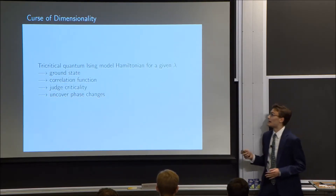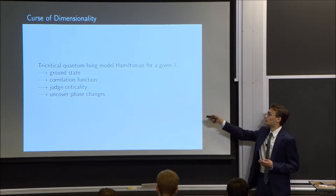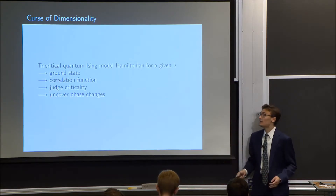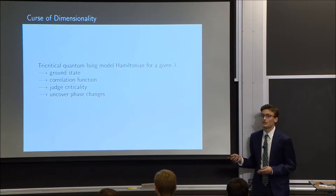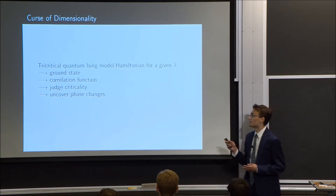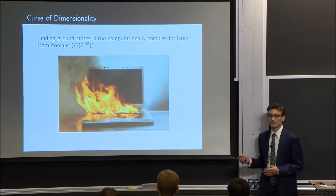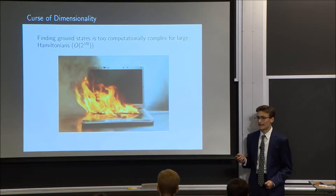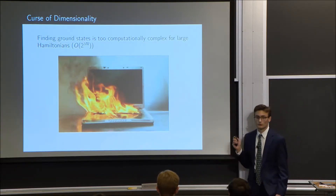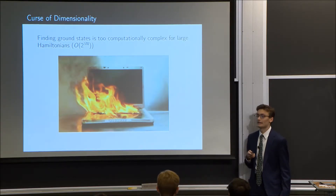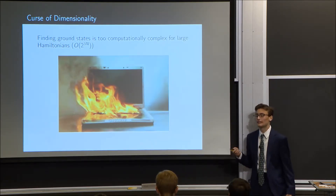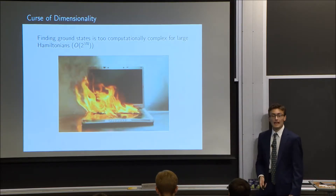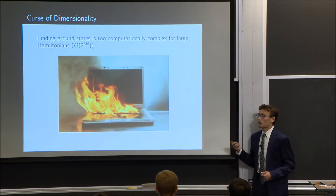For any given lambda we can define the tricritical quantum Ising model's Hamiltonian, calculate its ground state, find the correlation function of that ground state, and use the shape of it to judge whether or not it's critical. But the issue is in finding the ground state. The computational complexity of calculating that ground state scales exponentially with respect to the number of particles involved because of the increase in size of the Hamiltonian. Since it's exponential, it's far too computationally complex to calculate the ground state completely — we must find some workaround to approximate it, and for this study that workaround is tensor networks.